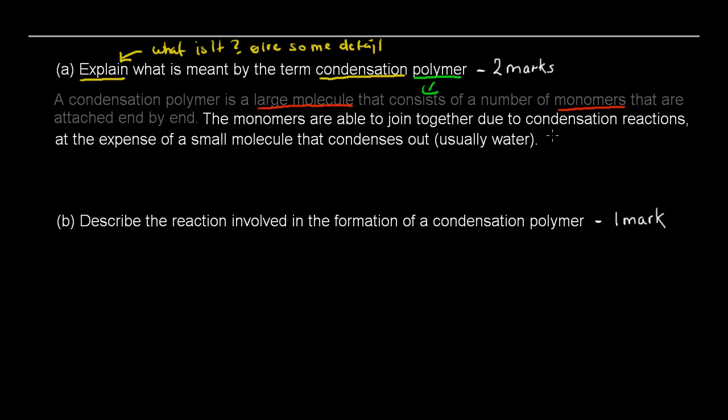So again, I used some of the scientific words such as condensation reaction. I made sure that I wrote that the monomers join together. From a couple of monomers, you go into a polymer. And also very importantly, I added the small molecules that condenses out, usually water. You could have written that small molecules are lost, but if you write condenses out, that's more scientific. Both are correct as well. So in this case, we have answered that question. We've explained what is meant by the term condensation polymer. First we explained what a polymer was, and then what a condensation polymer was. That should give us two marks.